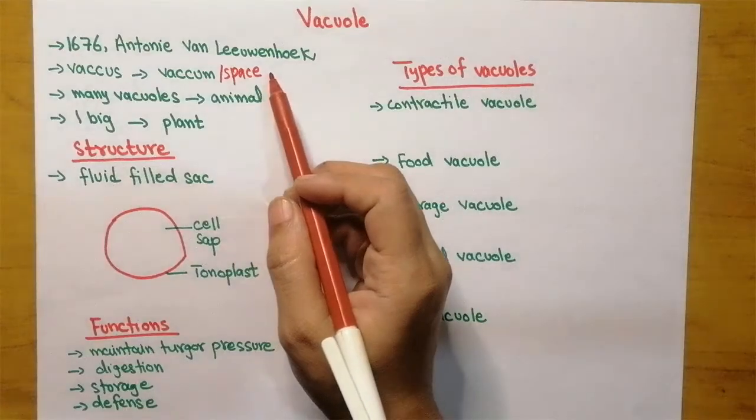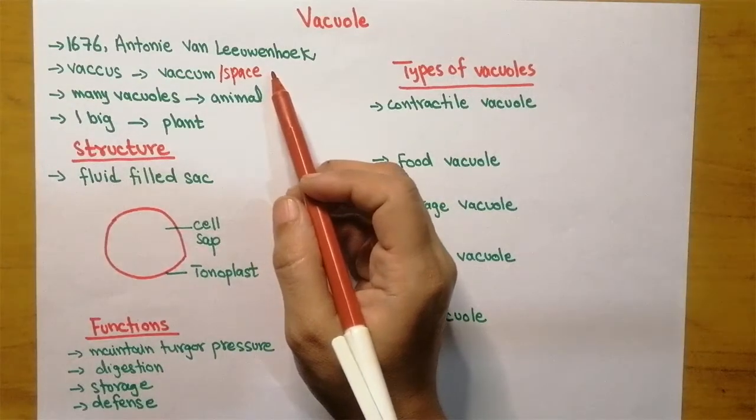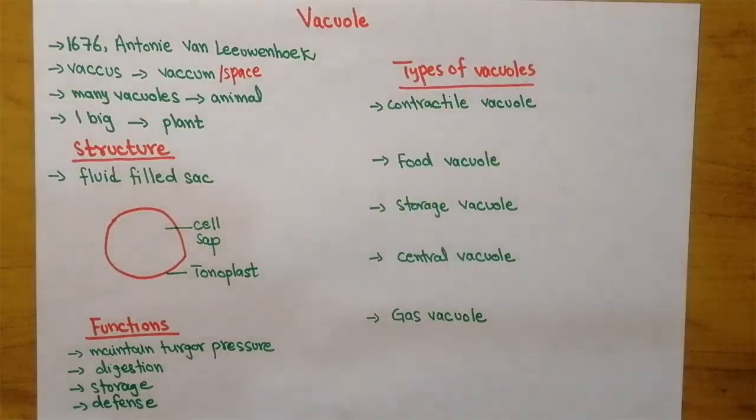Because this word is showing the space and vacuole inside the cytoplasm is like an empty space, they gave the word vacuole to that particular organelle.